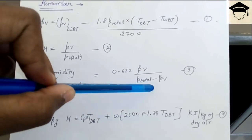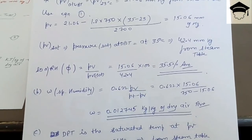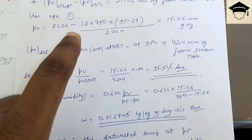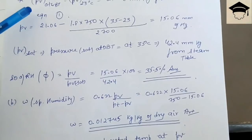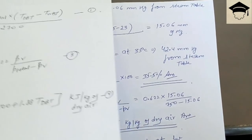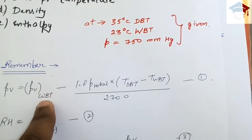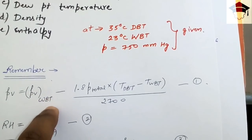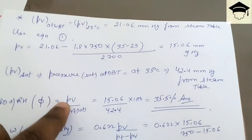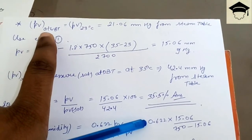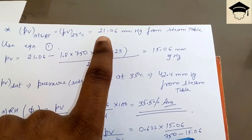To solve, first find the partial pressure at wet bulb temperature. Using the steam table at WBT = 23°C, the saturation pressure is found to be 21.06 mmHg.